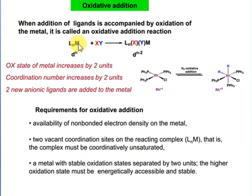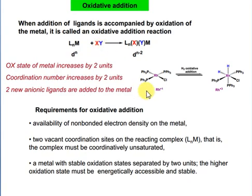After this addition, some changes occur. For example, the oxidation state of the metal increases by two units, the coordination number of the metal increases by two units, and two new anionic ligands are added to the metal. These X and Y are anionic ligands or parts of the molecule.